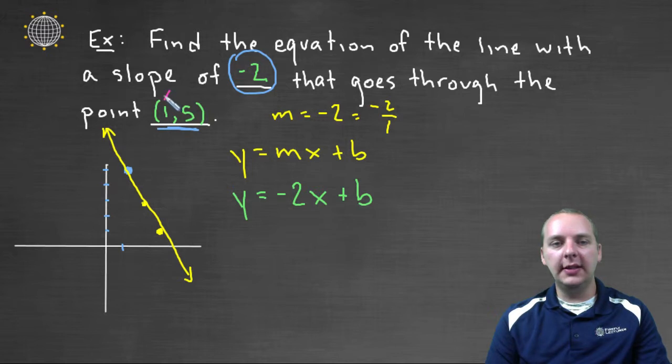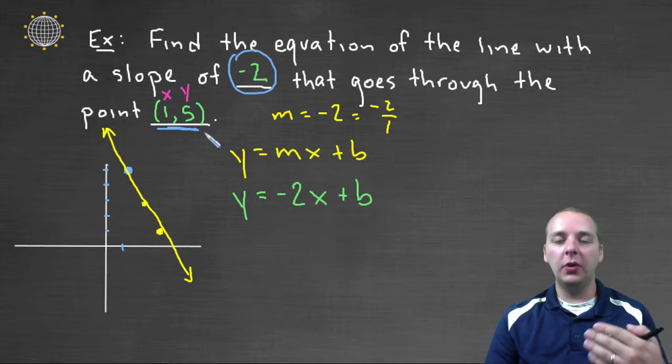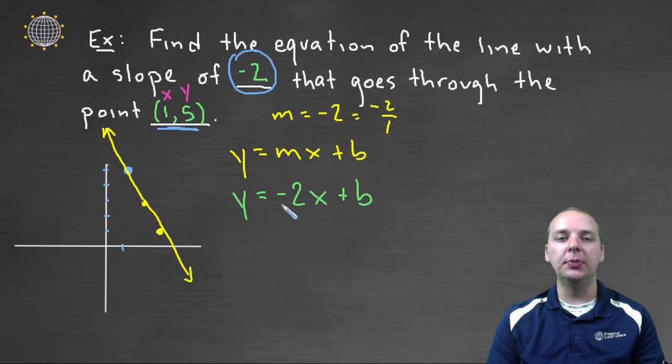Realize that the one is the x value and five is the y value. And with that being a point on the line, what that means is that ordered pair should make the equation be true. In other words, when you plug in one for x and five for y, you should have an equality here. So let's try that.